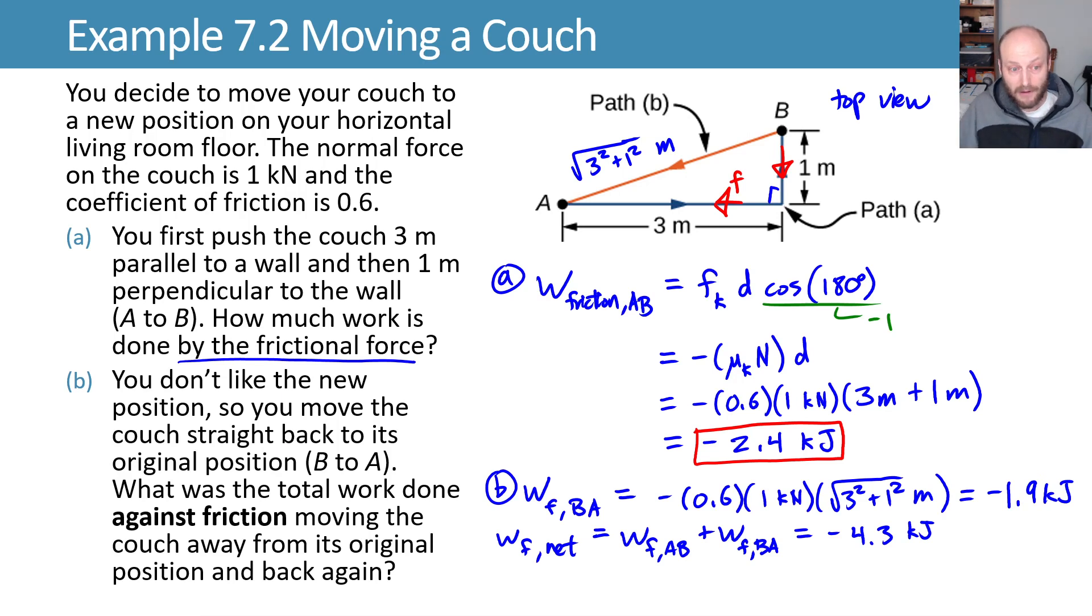That's the work done by friction. We want the work done against friction. So the work done against friction will just be the negative of that or a positive 4.3 kilojoules in order to overcome that friction.